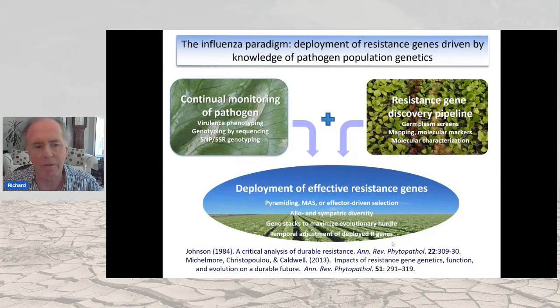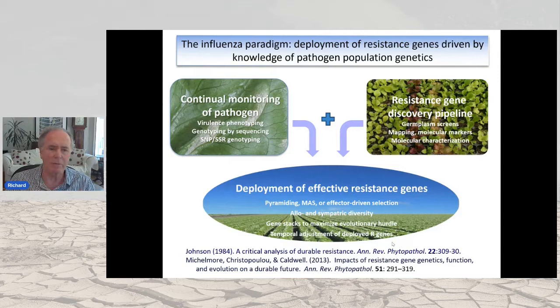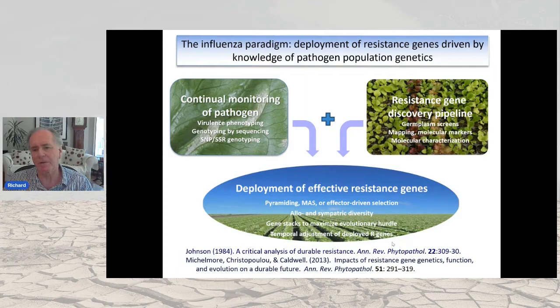I use the analogy of the influenza paradigm. The WHO monitors variation in the influenza virus and approves the mix of strains to include in producing the vaccine against influenza, continually monitoring the pathogen and designing vaccines against it. We basically need to do the same for plant pathogens: continually monitor the pathogen, use that information to identify effective resistance genes, and decide which ones to deploy heterogeneously in space and time.